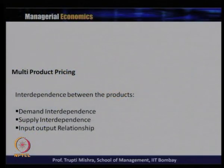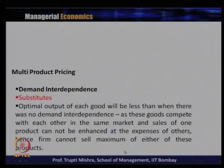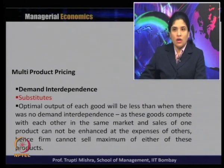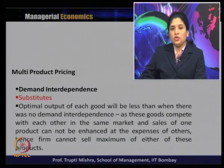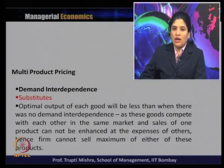This pricing is dependent on the interdependence between the products — whether the interdependence is on the basis of demand, supply, or an input-output relationship. Starting with demand interdependence, there are two kinds of goods: substitute goods and complementary goods. If there is demand interdependence, substitute goods are those where both goods are related to each other.